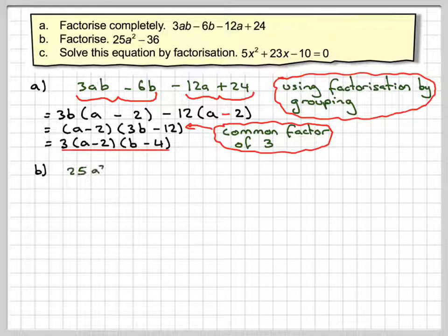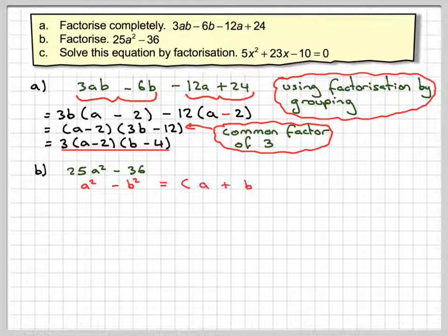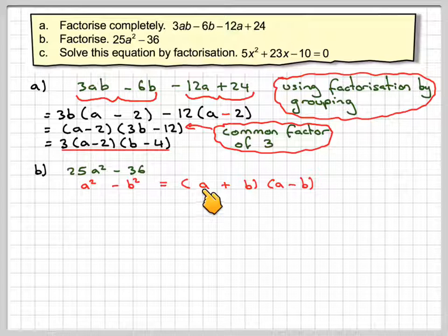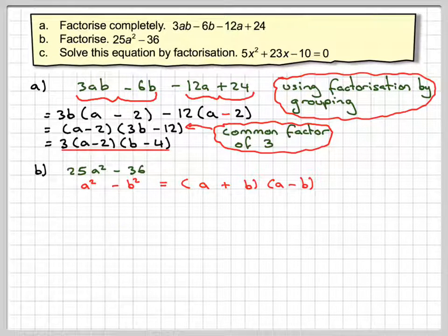Second one, 25a squared minus 36. Now you might recognize this is the type a squared minus b squared, and you should know that that factorizes down to a plus b, a minus b. So you need to know this for IGCSE.